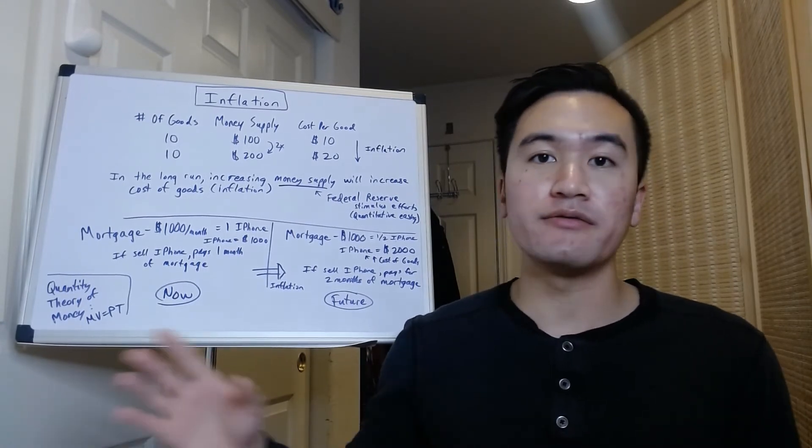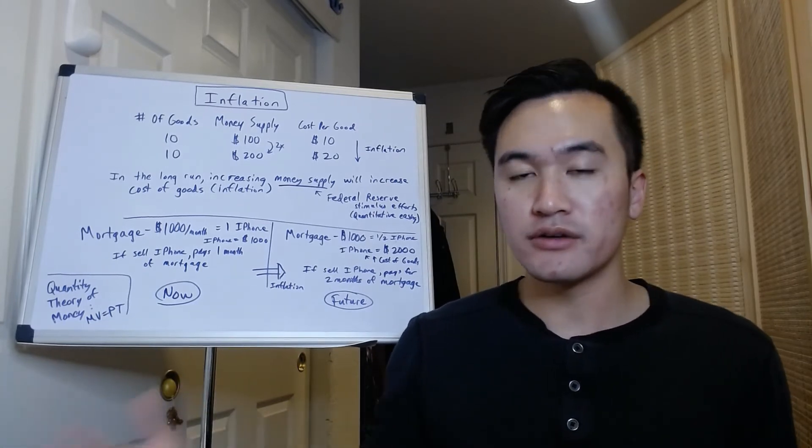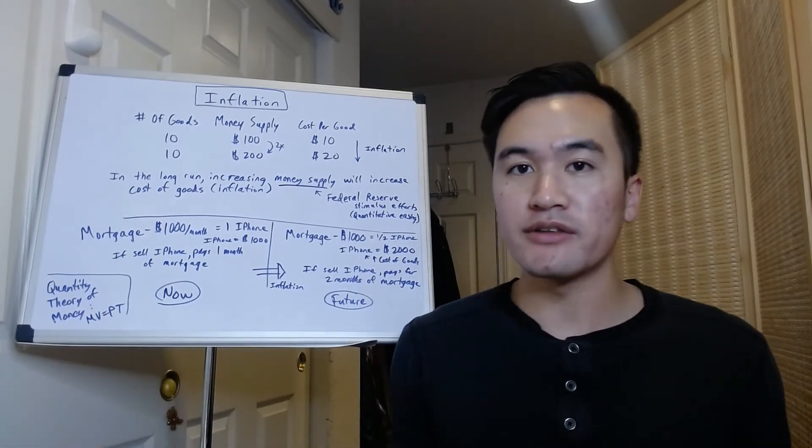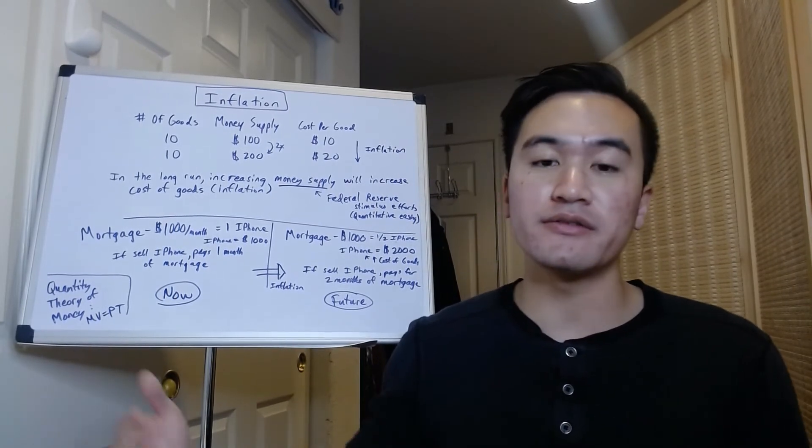But let's say in the future that inflation occurs and the cost of goods go up. So an iPhone is now worth twice as much—let's say an iPhone is worth $2,000 now because of inflation.